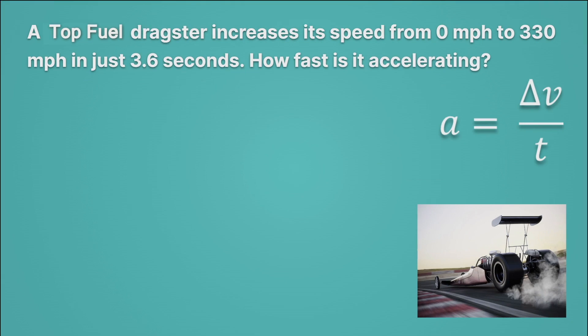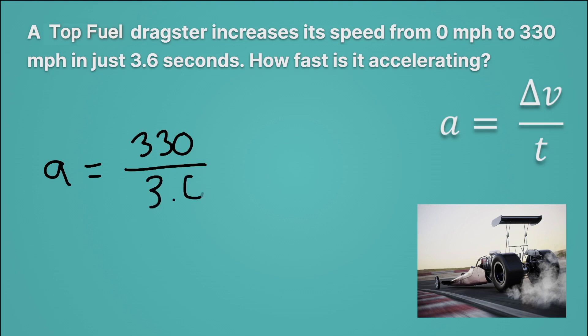Let's go ahead and calculate acceleration. Here we're told about our top fuel dragster — it increases its speed from zero miles per hour to 330 miles per hour in just 3.6 seconds. How fast is it accelerating? We're going to solve for acceleration by plugging in the change in velocity up top, which is 330 miles per hour, and divide that by the time it took to accelerate: 3.6 seconds. So what we'll get is 91 — and then we'll get a bunch of sixes, 0.666 — we're going to round that up to seven.